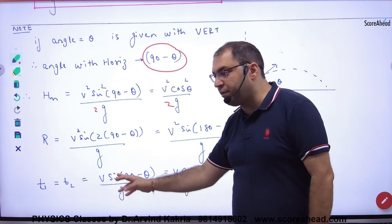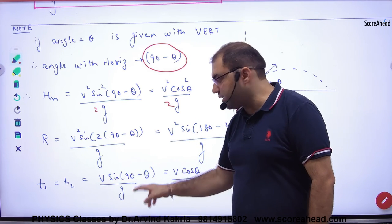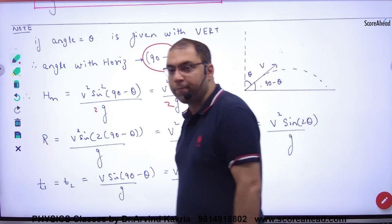In the time of ascent or descent, V sin theta by g. If theta is 90 minus, this will be cos. Is it clear?